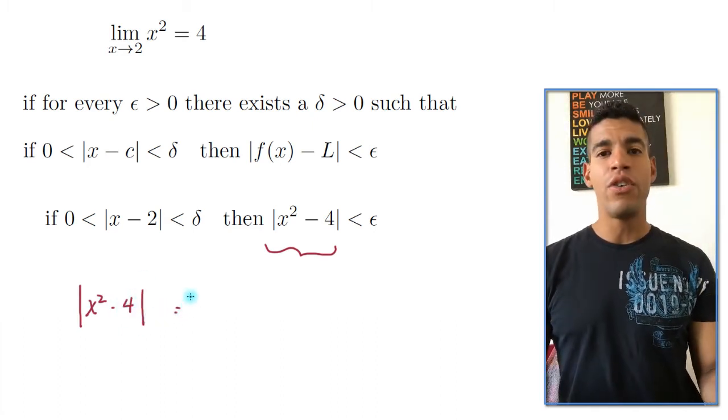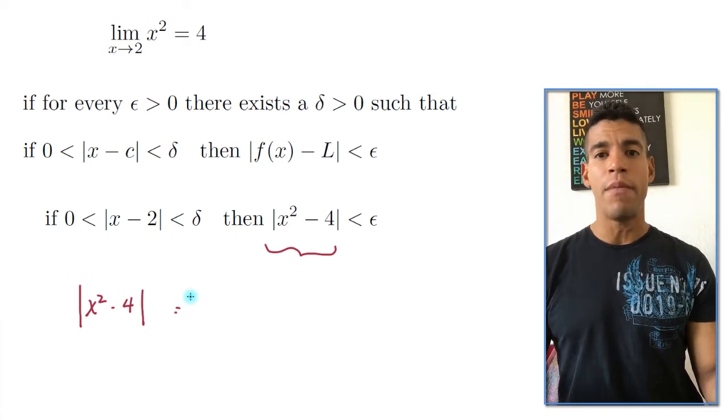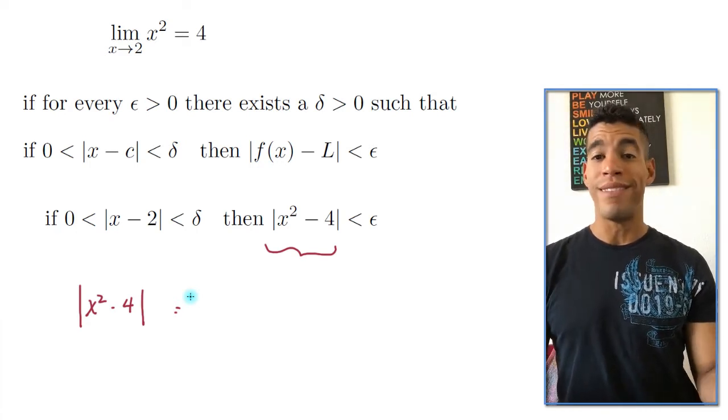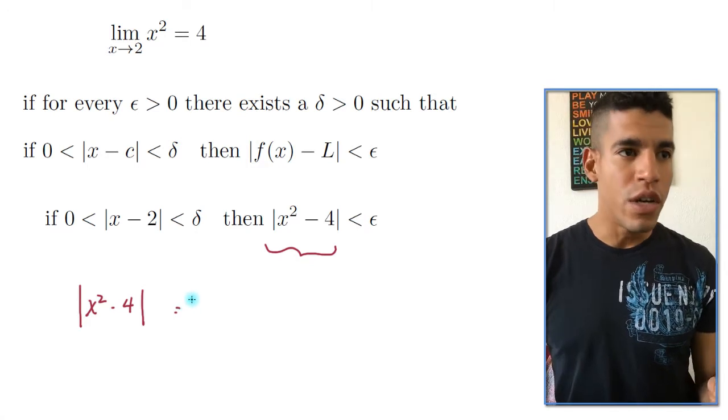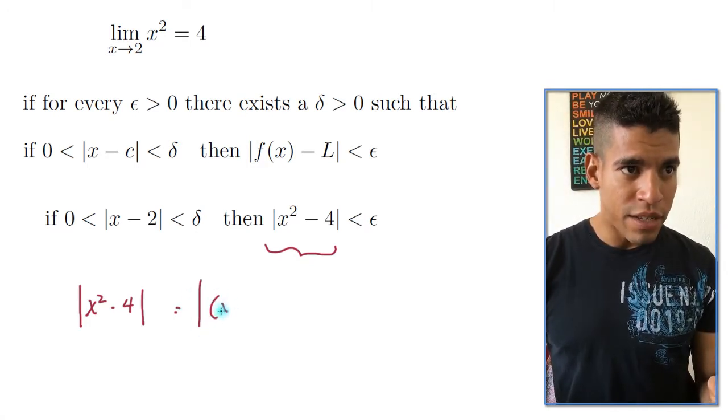Now by now, you should notice that x squared minus 4 can be broken up. It's a difference of squares. That's exactly what we're going to do. So this is x minus 2.